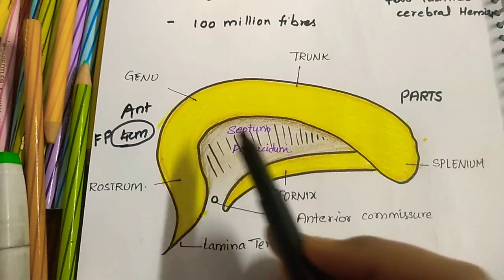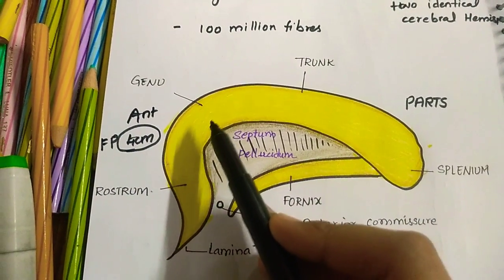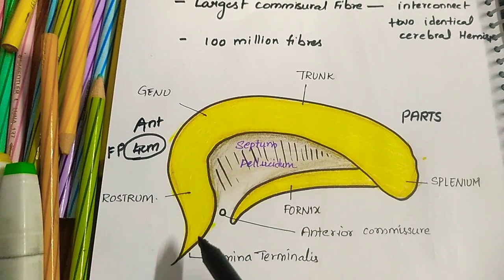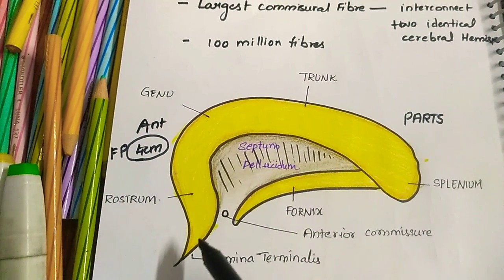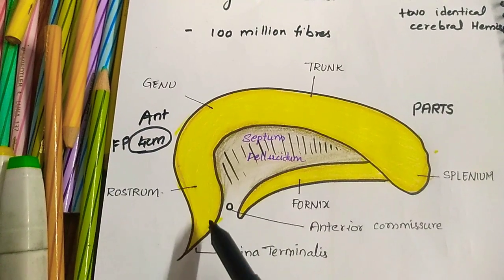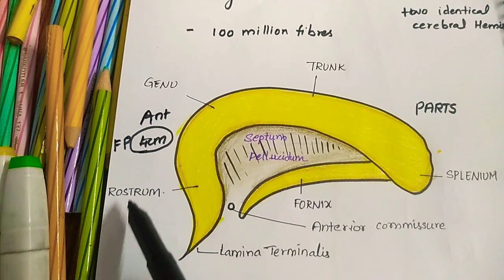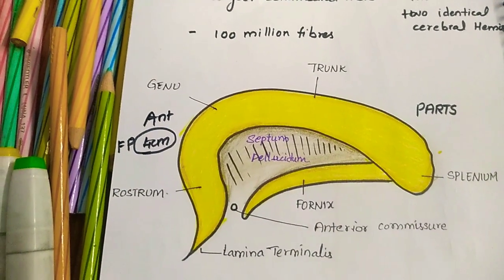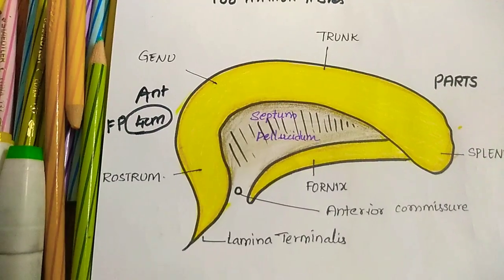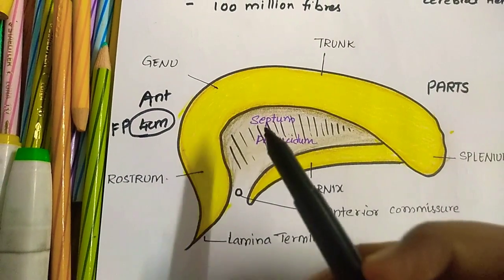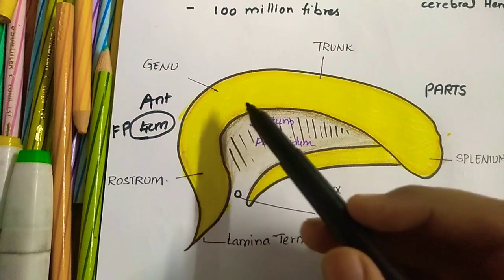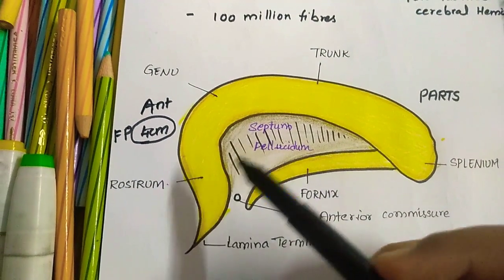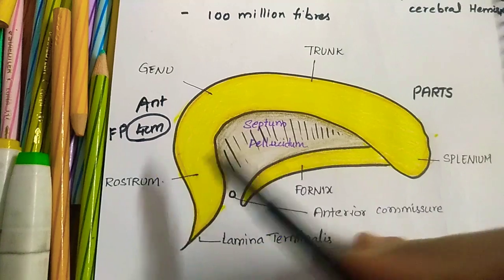The genu extends downwards and backwards to form a loop called the rostrum. The rostrum is the anterior prolongation of the genu.